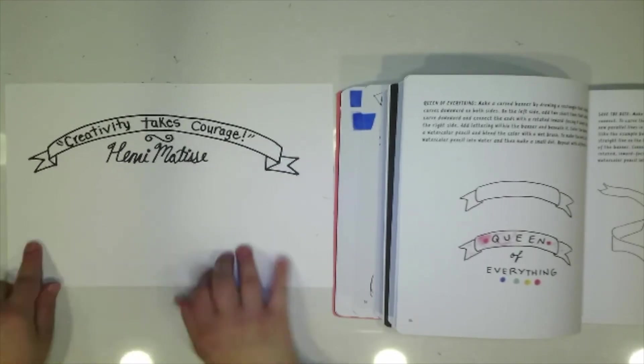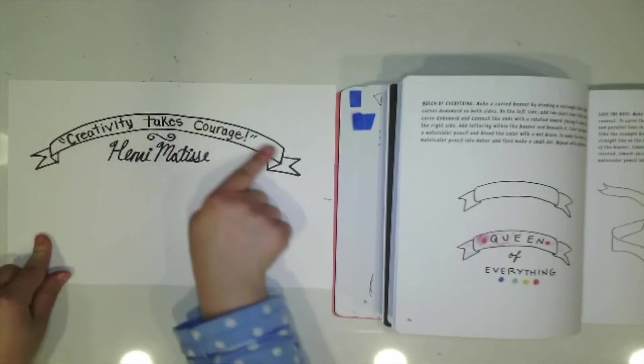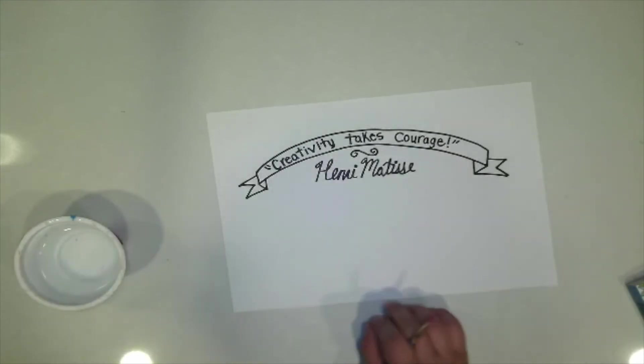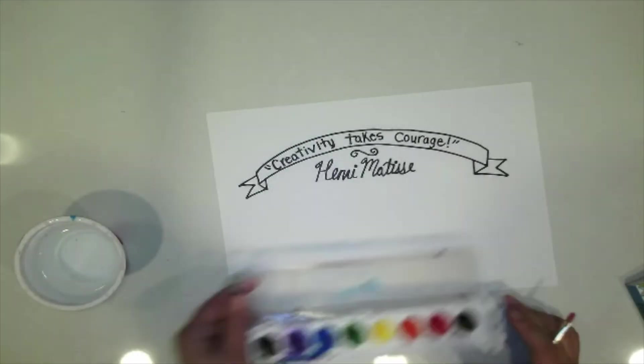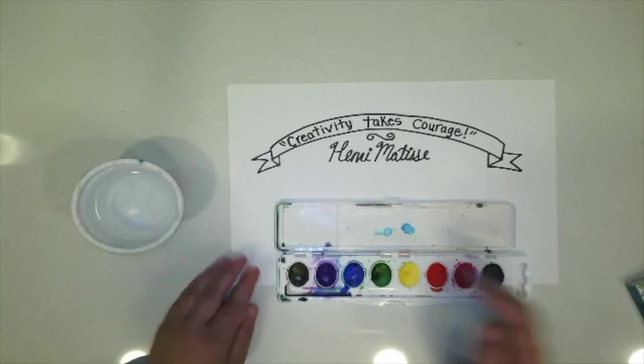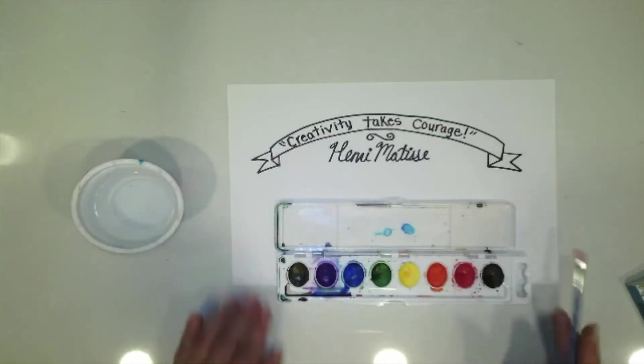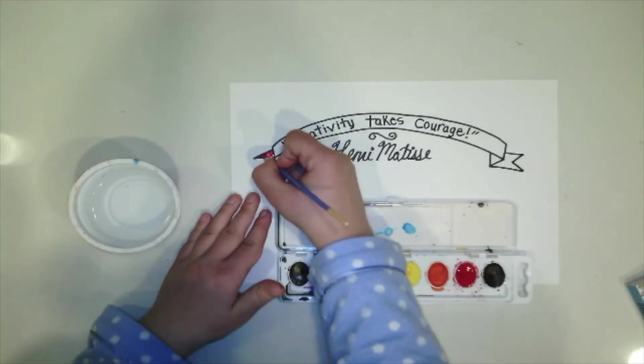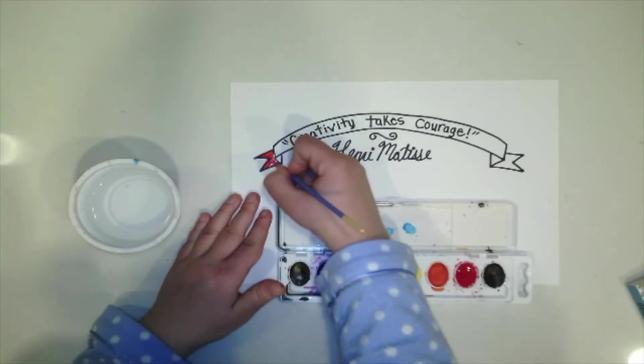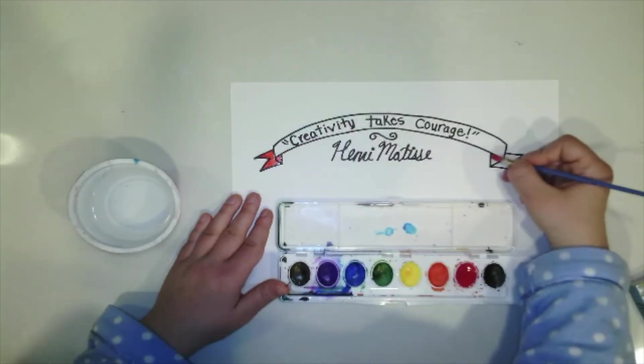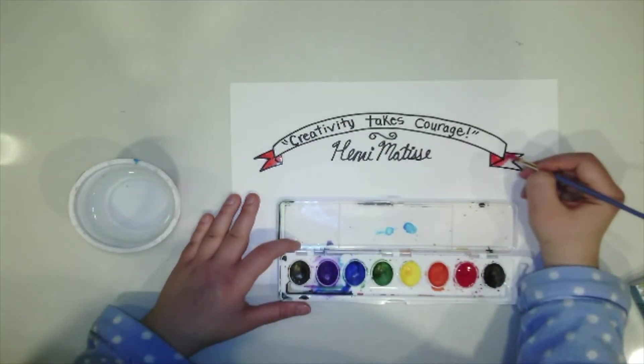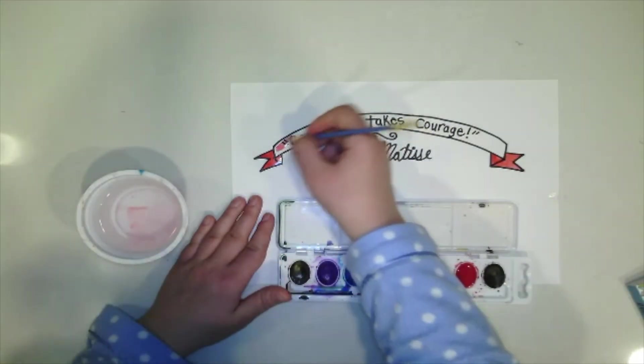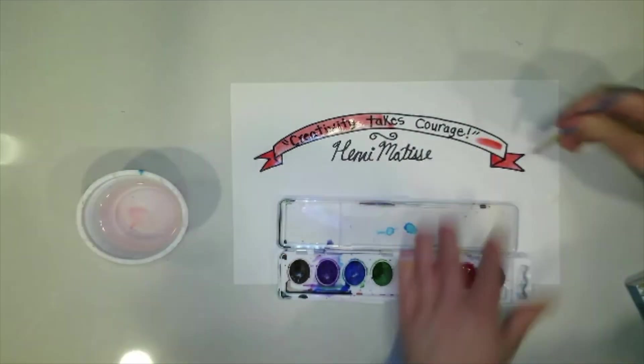So I think I'm actually going to grab some watercolors. And I'm going to paint in the ribbon a really fun color. Okay so I have my watercolors. And I'm going to paint the ribbon part. I'm going to paint the sides darker. You could do this with crayon. You could do this with marker. But if you have watercolor it might be kind of fun to use that for your calligraphy. I'm going lighter in the middle.